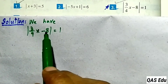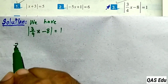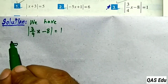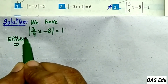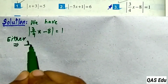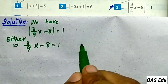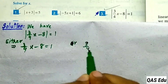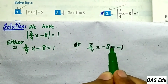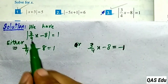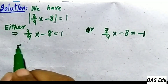Question number 3. For the given equation we have two possibilities: either 3 over 4x minus 8 is equal to plus 1, or 3 over 4x minus 8 is equal to minus 1. The absolute value gives one positive and one negative result.